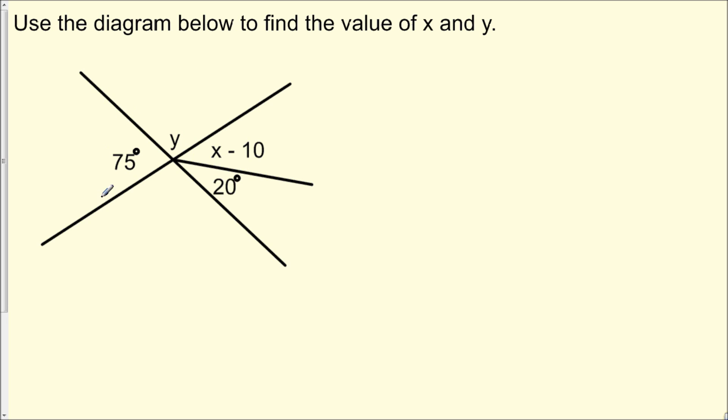That is, if we look over here, notice how this angle, this 75 degree angle and this angle y, together, the two of them form a straight line. So if we use this concept of straight angles, we could set up the equation 75 degrees plus y equals 180 degrees.